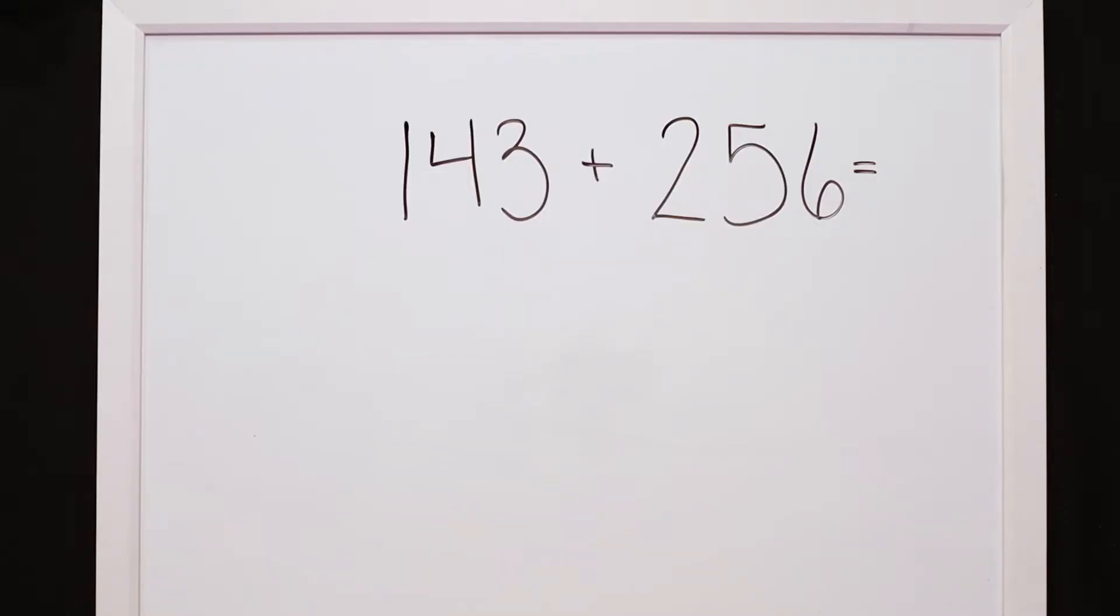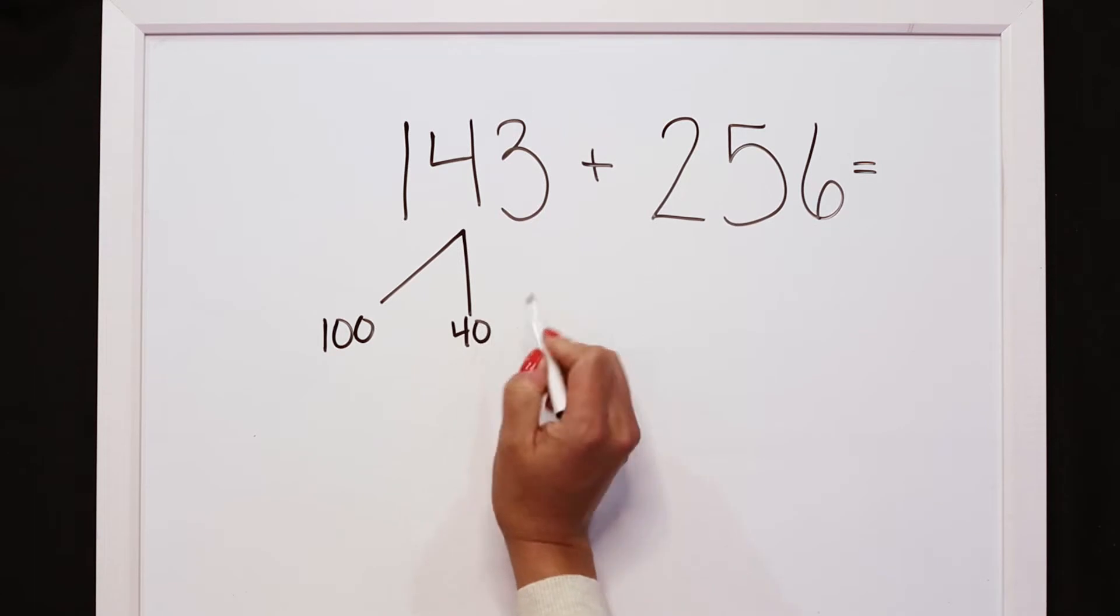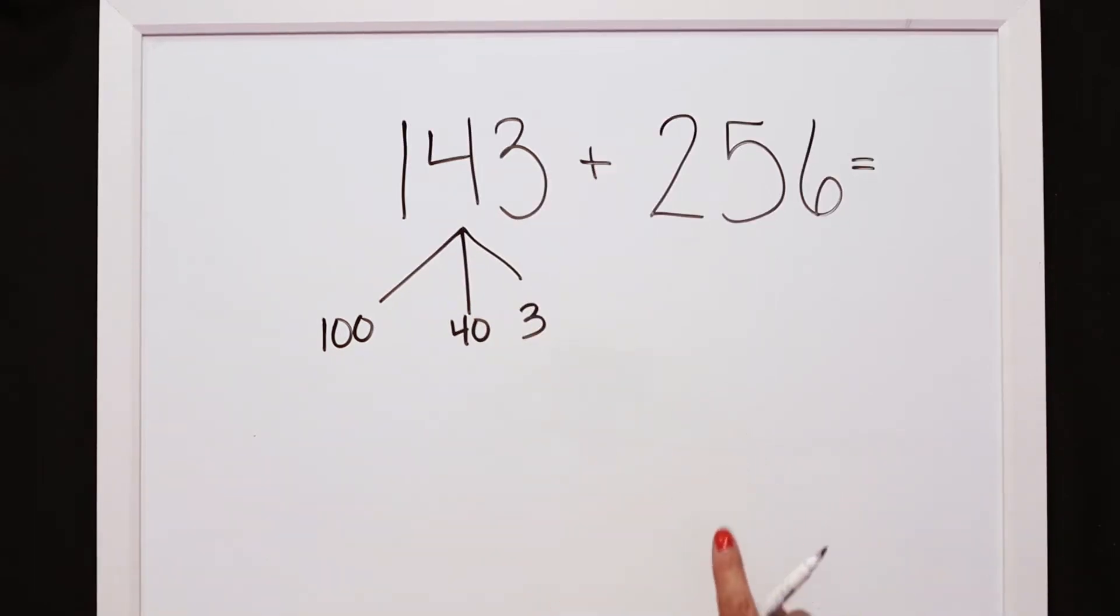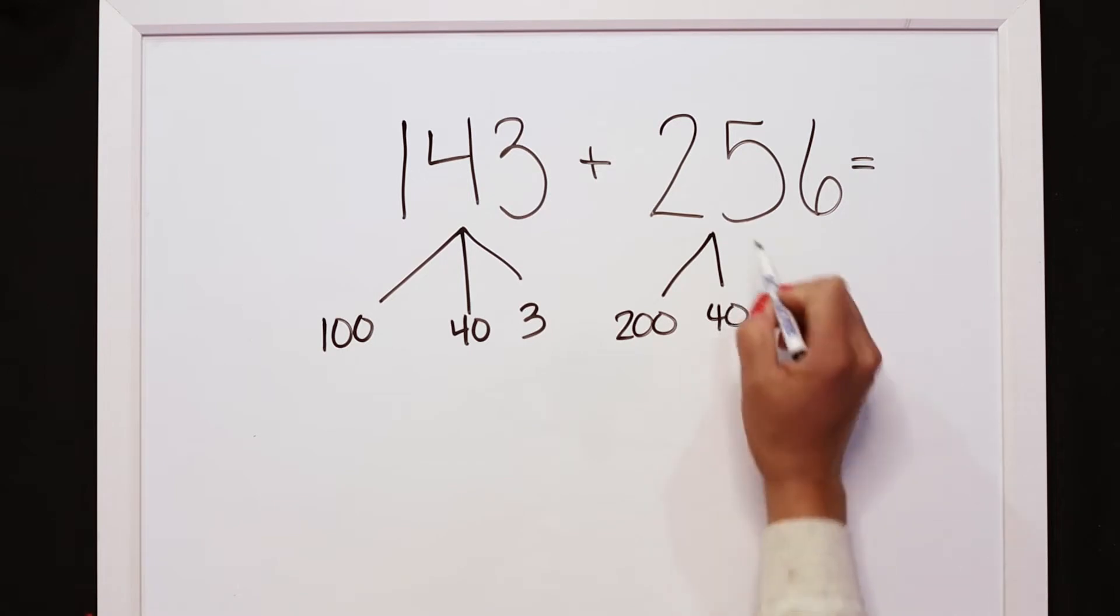If I have our problem 143 plus 256, if I decompose by place value, I know that 143 is going to break into my 100, my 40, my 4 tens, and 3 ones. ValuePack decomposed 256 into 240 and his 6 ones to get 256.